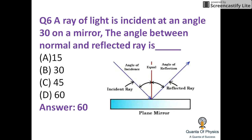A ray of light is incident at an angle of 30 degrees on a mirror. The angle between the normal and the reflected ray is 60 degrees, because 30 degrees is the angle between the incident light and the plane of the mirror.